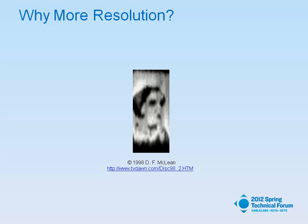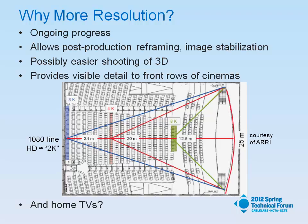This is 30-line resolution, and notice that the lines are vertically oriented. Why do we need more resolution? It's ongoing progress. John Logie Baird's first pictures had eight scanning lines, and then he had 30. The first high-definition requirement said that high-definition should be not less than 240 lines.